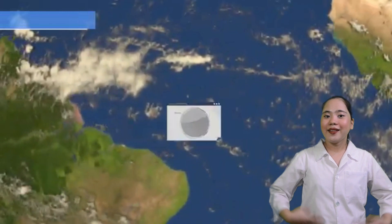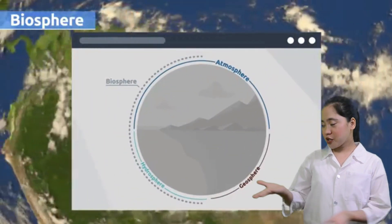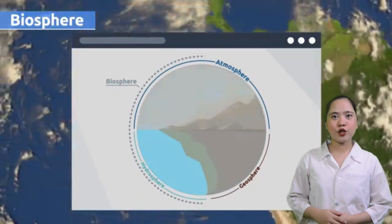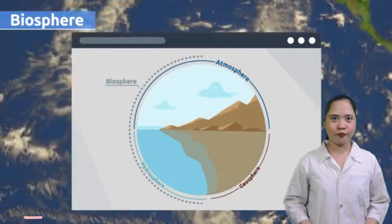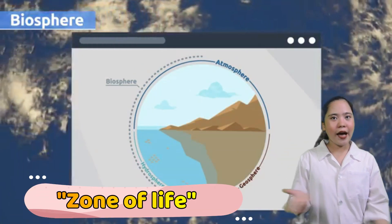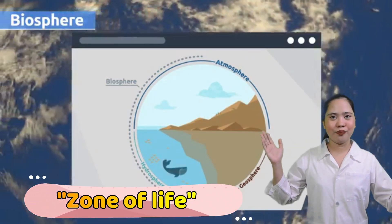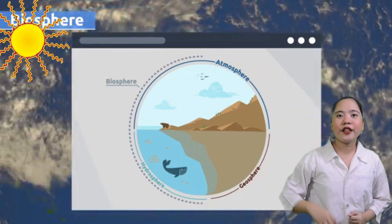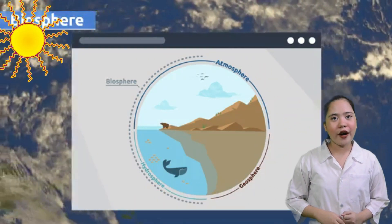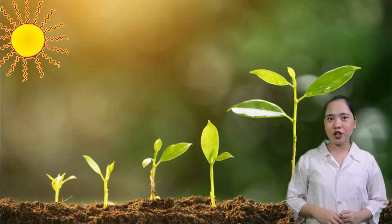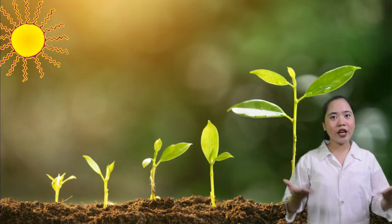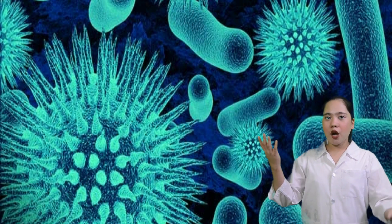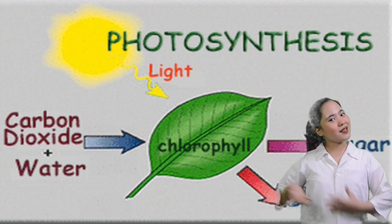And lastly, we have the biosphere, termed as the zone of life — it is the part where life exists. Life on Earth depends on the sun. Energy provided as sunlight is captured by plants, some bacteria, and other organisms through the marvelous phenomenon of photosynthesis.